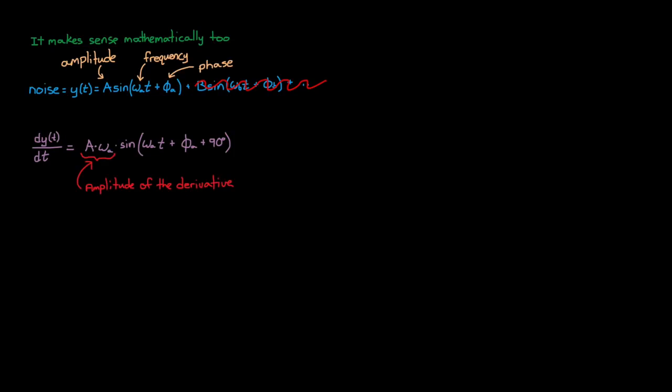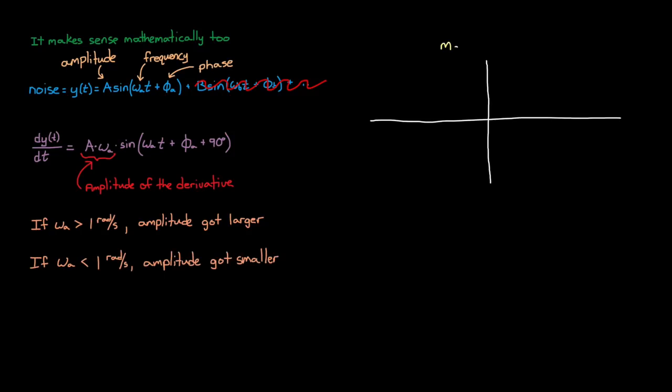And from here it's easy to see that if omega a is greater than 1 radian per second, the amplitude got larger. And if omega a is less than 1 radian per second, the amplitude got smaller. And if we plot this magnitude change, it will look like this sloped yellow line, where higher frequencies create higher amplitude signals and lower frequencies create lower amplitude signals.